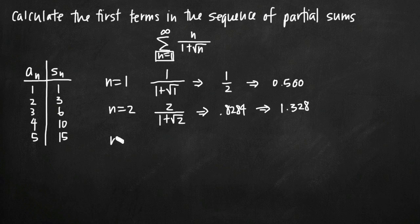So let's just do one more term. We'll get n equals 3. We'll get 3 over 1 plus the square root of 3. When we evaluate that on our calculator, we'll get approximately 1.098 or so. But remember, that's only the third term of a sub n. In order to get the third term of s sub n, we need to add it to our previous value of 1.328. When we do that and we round, we get approximately 2.427 for the third term in our sequence of partial sums.